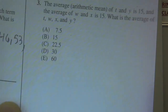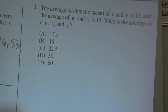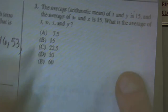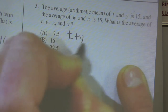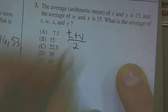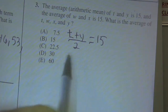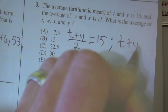Number 3 is an average problem. They love averages — they call them arithmetic means, and these are one of the things they're addicted to. The average of two numbers T and Y is 15, and the average of two more numbers W and X is also 15. Here's a trick on averages: if they give you the average of two numbers, T plus Y over two equals 15. Multiply both sides by two to get T plus Y equals 30.